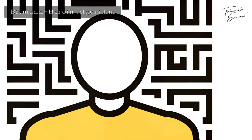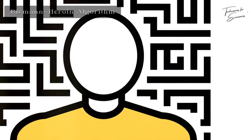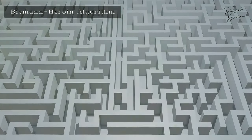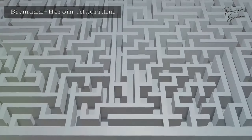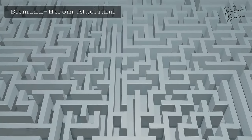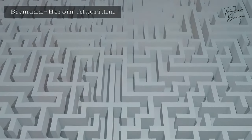this algorithm adapts in real-time to changing environments. By continuously updating its pathfinding strategy, the Beeman Heroin algorithm ensures optimal routes are always found, even in the most unpredictable mazes.